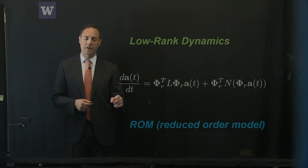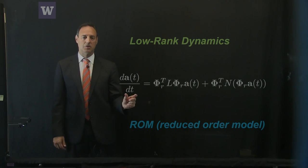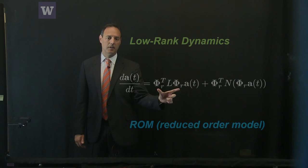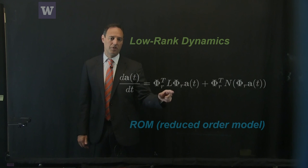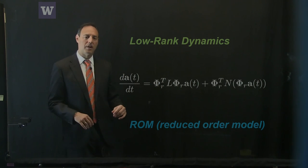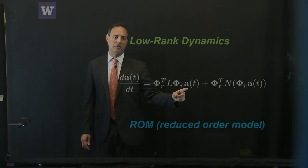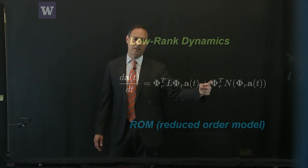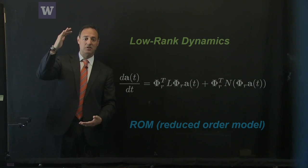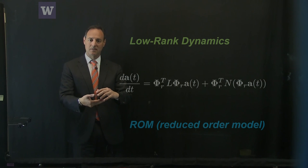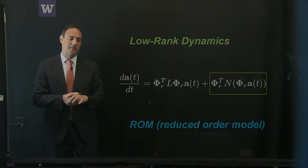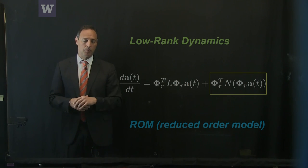Substituting back into the original nonlinear dynamical system gives a low-dimensional dynamical system for A of t — the time evolution of the POD mode coefficients. The linear portion can be pre-computed as the R-by-R matrix: inverse of phi-R-transpose times L times phi-R. This is trivial to work with. What is hard is the nonlinearity, which must be updated as the solution evolves, requiring inner products repeatedly in the very high-dimensional space — that is where much of the problem lies.